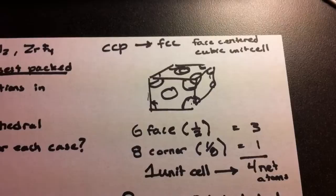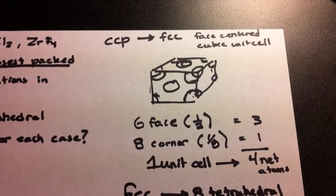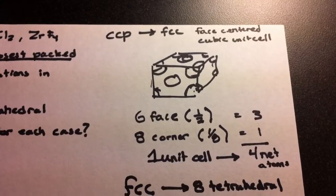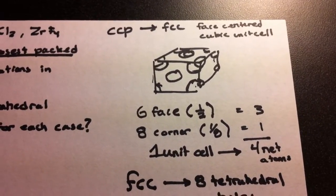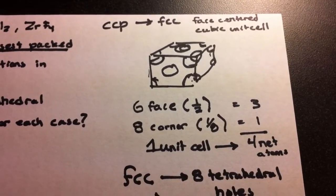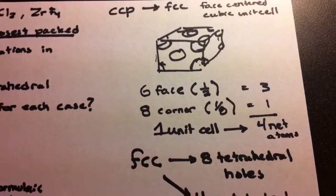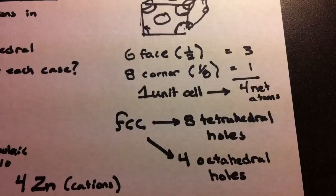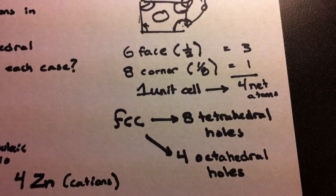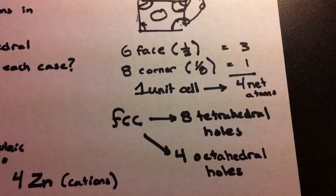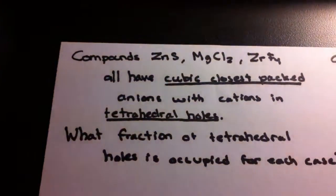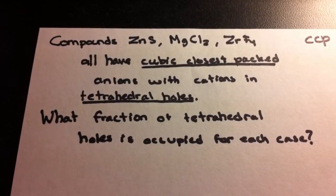Some information to know before you begin: the cubic closest packed structure refers to having the face-centered cubic unit cell. You should have derived that the face-centered cubic unit cell has approximately four net atoms inside. It also has eight tetrahedral holes and four octahedral holes. In this case, we're not going to worry about the octahedral holes because the cations are only going to be fitted into the tetrahedral holes.